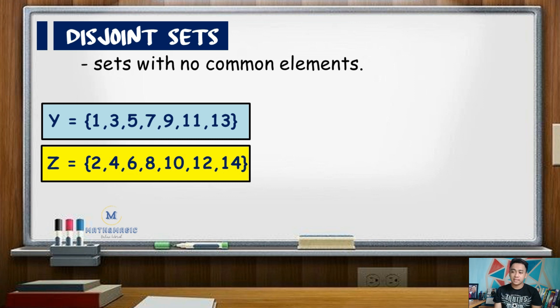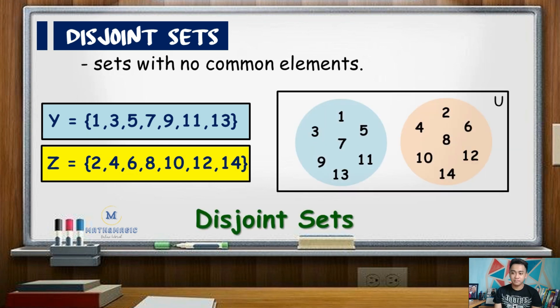While set Z has the elements 2, 4, 6, 8, 10, 12, 14 which are the first seven positive even integers. So as you can see, there is no common element in both sets. Illustrating this in a Venn diagram, the graphs did not coincide or overlap.